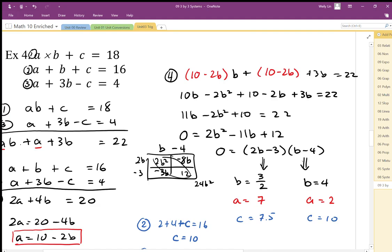I can check that 1.5 times 7, that's going to be 10.5 plus 7.5 equals 18. That's correct. b times a is 8 plus 10 is equal to 18. That's going to work here. We checked it in equation 2. We can just check in equation 3. So 2 plus 3b is 12. That's 14 minus 10 is equal to 4.